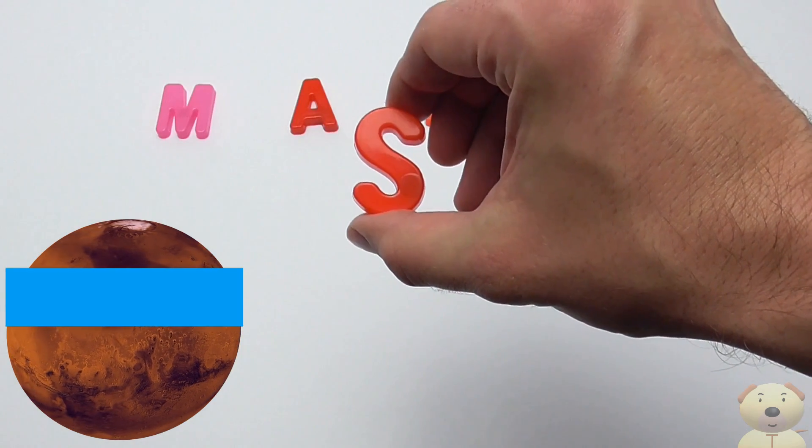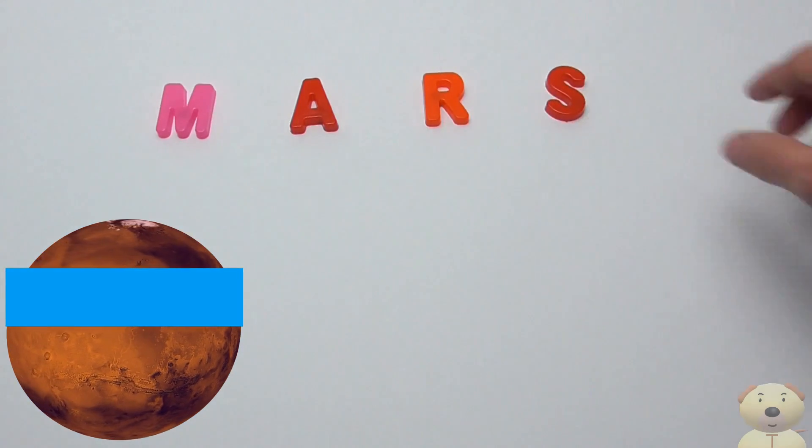S is for 7. It would take you around 7 months to get to this planet from Earth.